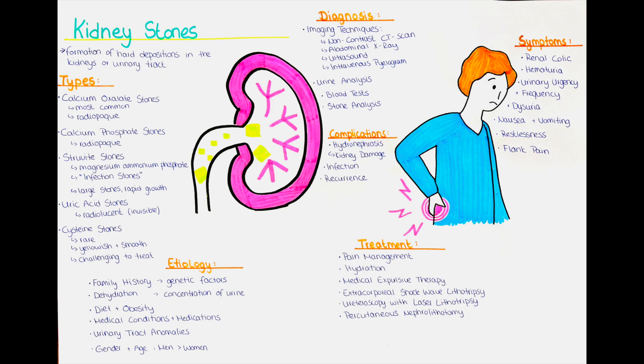Extracorporeal shock wave lithotripsy involves the use of shock waves to break up larger stones into smaller pieces that can pass more easily. This non-invasive procedure is often used for stones located in the kidney or upper ureter. Ureteroscopy involves the insertion of a thin tube, called a ureteroscope, through the urethra and bladder to reach and remove or fragment stones in the ureter or kidney. Laser lithotripsy is commonly used during this procedure to break up the stones.